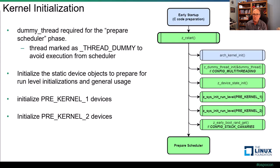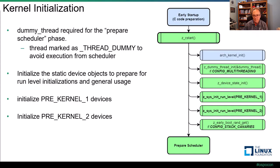Before moving to the scheduler, if the stack canaries kconfig is enabled and the compiler supports it, a canary value is pulled from the random subsystem. The compiler inserts this value into the stack frame on function entry and validates it on exit for stack corruption detection. Enabling this option can result in significant code size increase and reduced performance, but it is useful when debugging. At this point, all pre-kernel devices are initialized and we can transition to starting up the kernel scheduler.